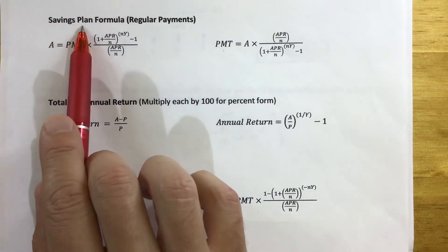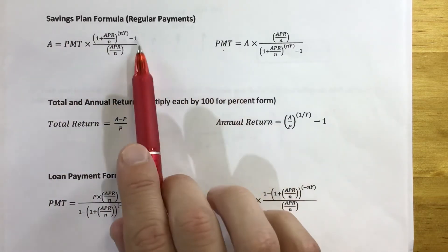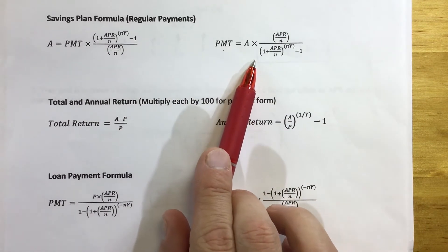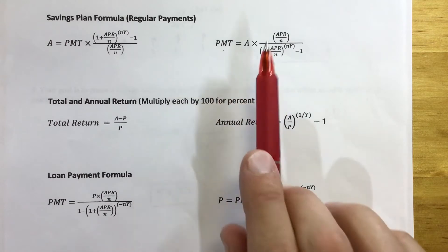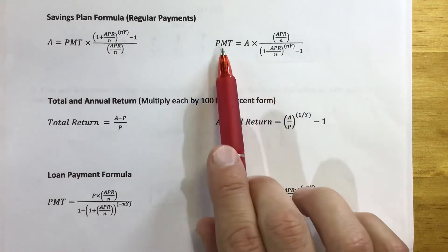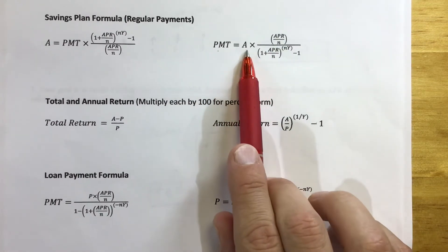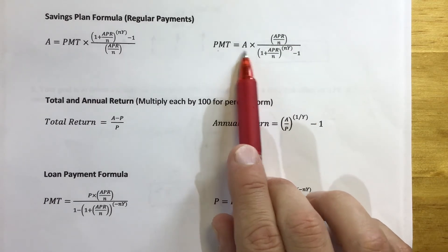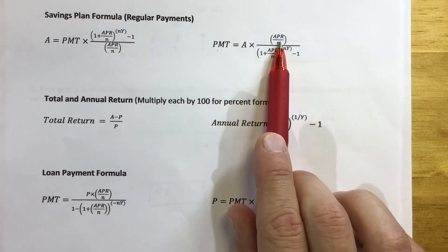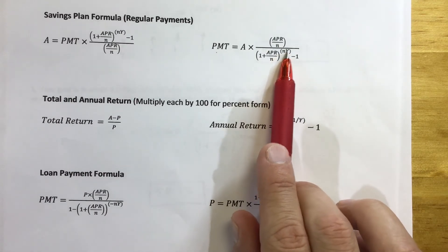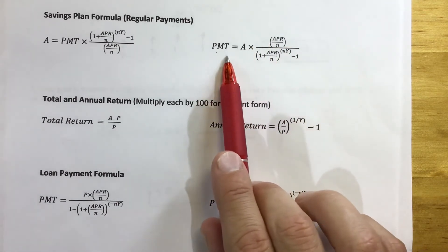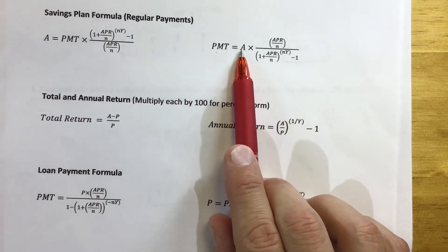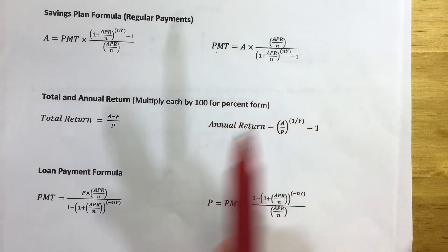Since we're saving for college — not paying back a loan — it's one of the two savings formulas. The question asks how much to deposit monthly to accumulate $150,000 in 16 years, so we're solving for the payment given the accumulated goal. That means we use the formula that calculates your required payment given the target accumulated amount. You'll be given the APR and the time frame, and you'll solve for the monthly payment.